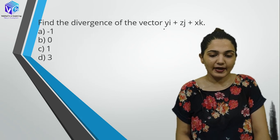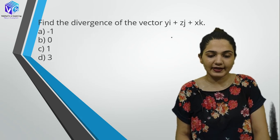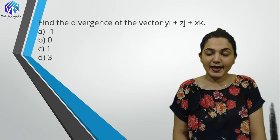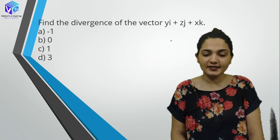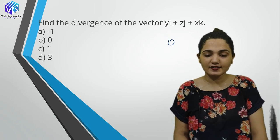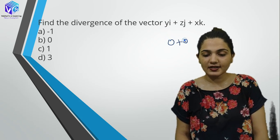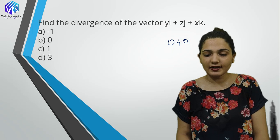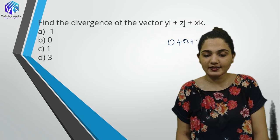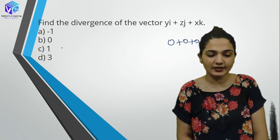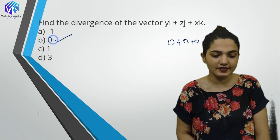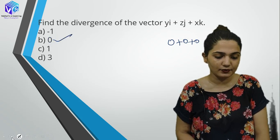Find the divergence of the vector y·i + z·j + x·k. del(y)/del(x) = 0, del(z)/del(y) = 0, del(x)/del(z) = 0. So the answer is 0.